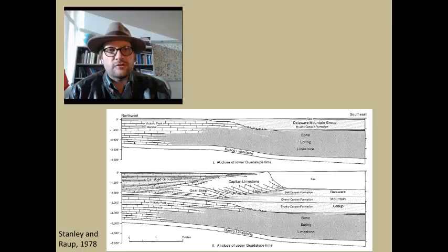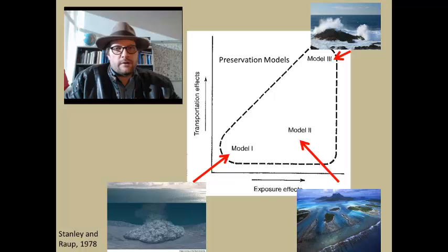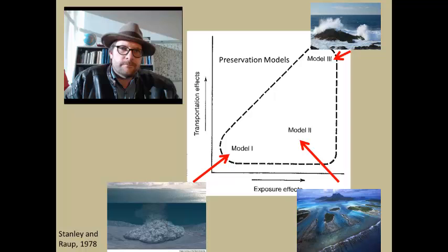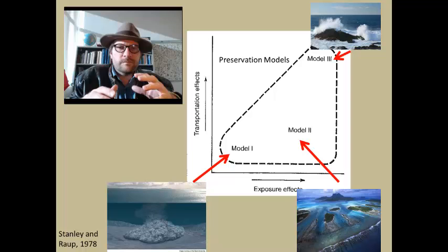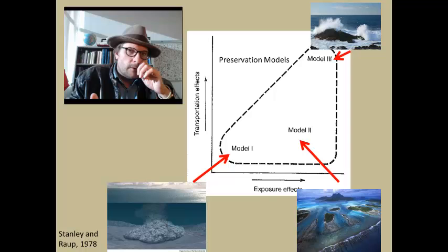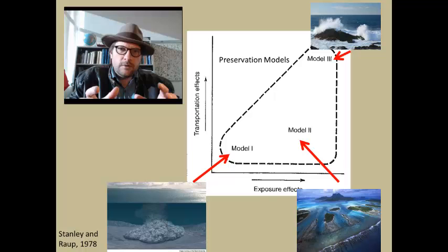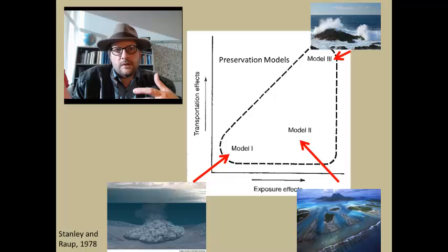One last thing to touch upon in this lecture is preservation models — thinking about how well preserved fossil communities are in different environments. We are comparing three models. Model 1 is a community that lives in a restricted area on the seafloor, below the low tide mark but above wave base, with low-velocity water that can increase at times. The substrate is composed of clastic sediments like mud or sand, with infrequent rapid burial possibly from the continental shelf. In this case, transportation and exposure of organisms are very low, so the fossil community likely reflects the actual community that lived in that environment.